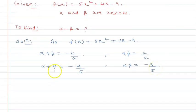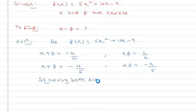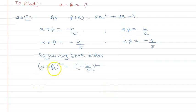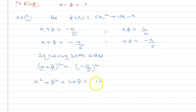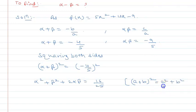Now, squaring both sides of alpha plus beta equals minus 4 upon 5, we get alpha plus beta whole square equals minus 4 upon 5, whole squared. Using the identity (a+b)² = a² + b² + 2ab, we get alpha squared plus beta squared plus 2 alpha beta equal to 16 upon 25.